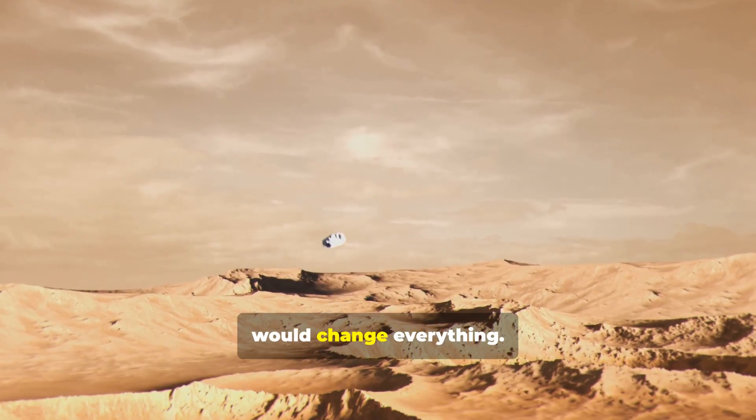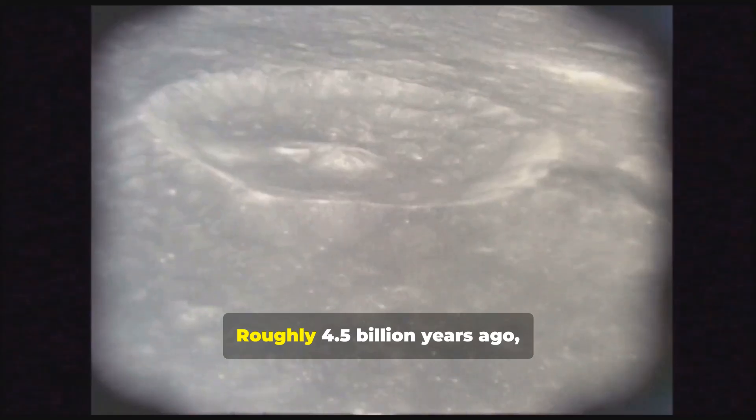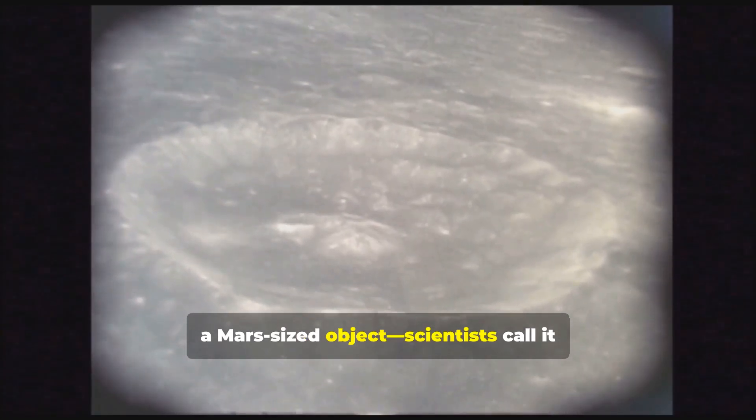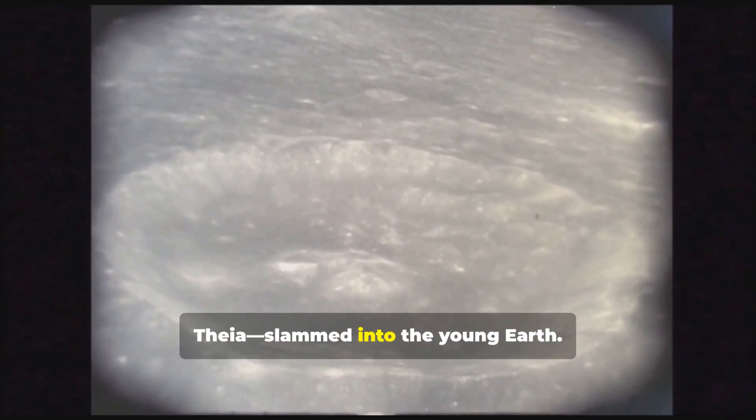One collision in particular would change everything. Roughly 4.5 billion years ago, a Mars-sized object, scientists call it Theia, slammed into the young Earth.